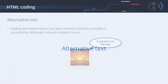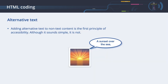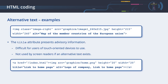Alternative text. Adding alternative text to non-text content is the first principle of accessibility. Although it sounds simple, it is not. This course offers a complete chapter on writing alternative text. In this chapter, we will learn how to embed alternative text into web pages. Here we see a very simple example: the alt attribute of an image allows us to enter alternative text that can be spoken by a screen reader. If an image has no alternative text, then the file name will be spoken, which in this case would not be very helpful.